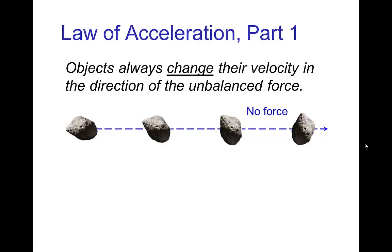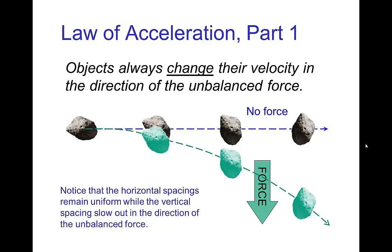The first part of the law of acceleration says that objects always change their velocity in the direction of the unbalanced force. So if we take this asteroid moving through space with no force on it, and instead we apply a force in the downward direction, the asteroid changes its motion and its velocity changes in the direction of that force. The asteroid is not moving straight downward, but its motion is deflected in that direction. The horizontal spacings stay uniform while the vertical spacings spread out in the direction of the force — as we saw when we looked at parabolic arcs.